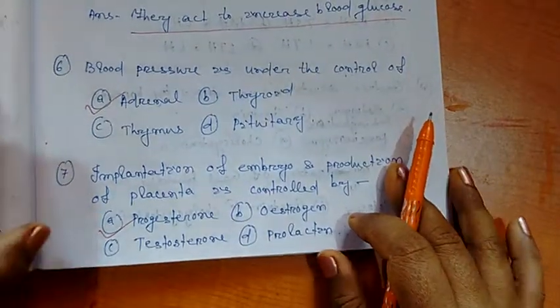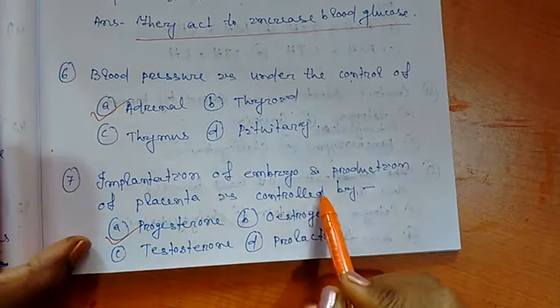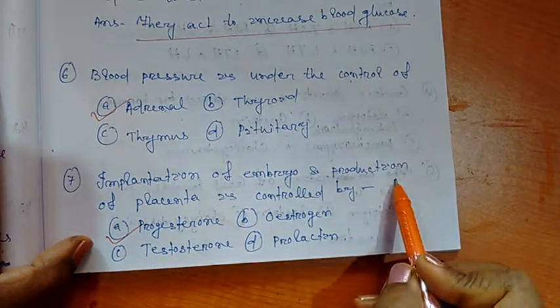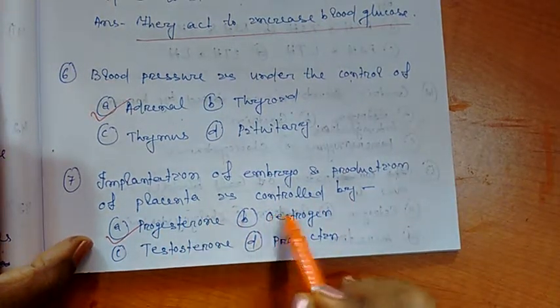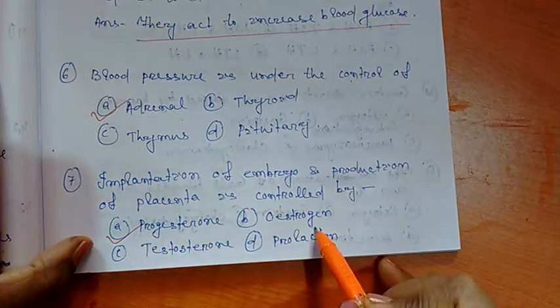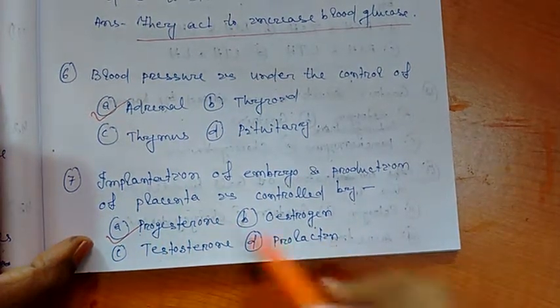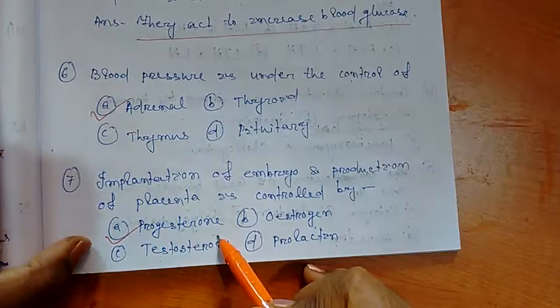Next, number 7. Implantation of embryo and production of placenta is controlled by progesterone, estrogen, testosterone, and prolactin. Right option is progesterone.